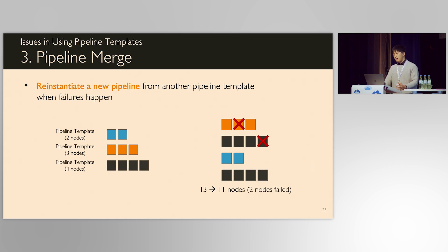Let's recap how a pipeline template is used when failures happen. Assume we lost two nodes here, the first pipeline now has only two nodes. Because we have a pipeline template for two nodes, we simply reinstantiate it and replace the old one. Same reinstantiation happens in parallel to the second pipeline using the pipeline template for three nodes.